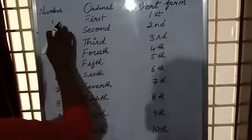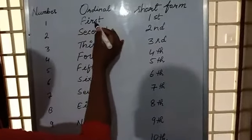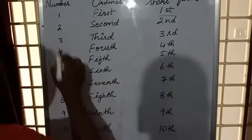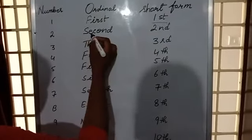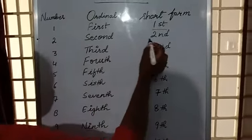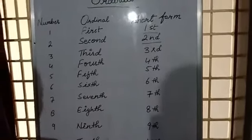See, the number 1, F-I-R-S-T first. In short form we will write like this. Okay? Number 2, S-E-C-O-N-D second. Second, we will write 2nd.